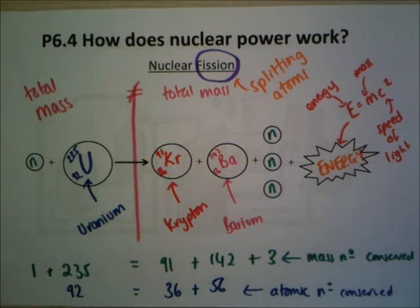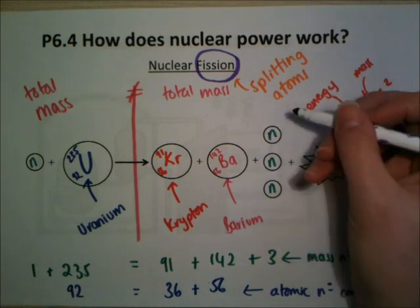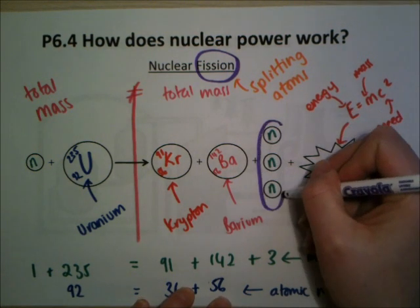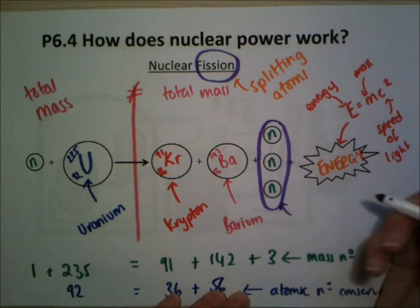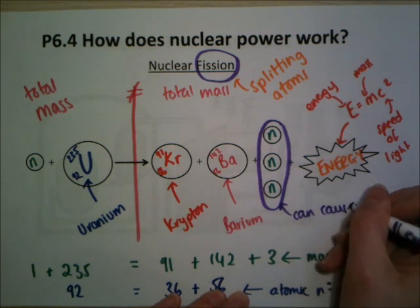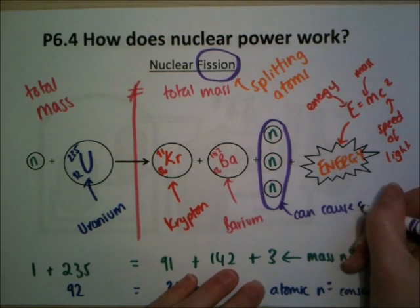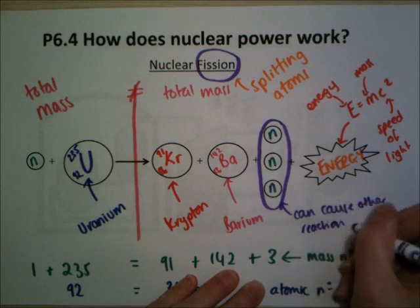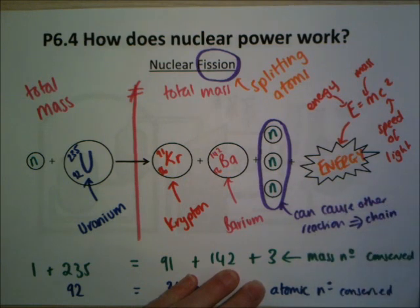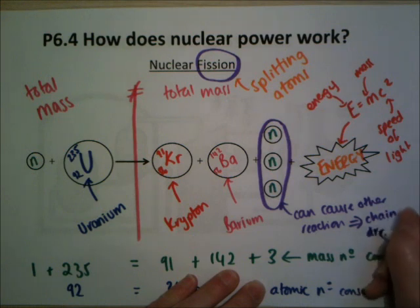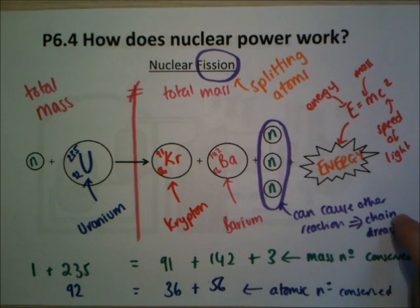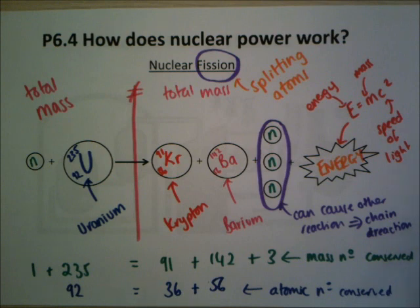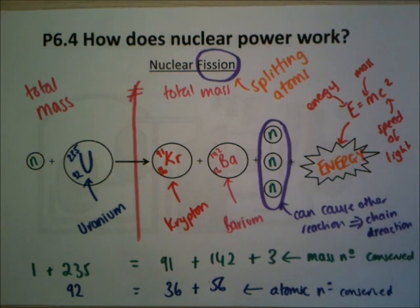The three neutrons released are important. You don't usually have just one uranium atom — you have a bunch of them. These neutrons can then go on to cause other reactions, exactly like the first one. We call this a chain reaction — it's like knocking down a line of dominoes, where one reaction sets off the next. If this is uncontrolled, that's how you get an atomic bomb. But a controlled chain reaction is how you get nuclear power.